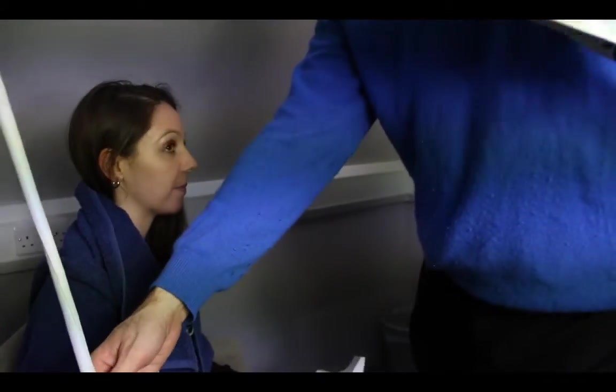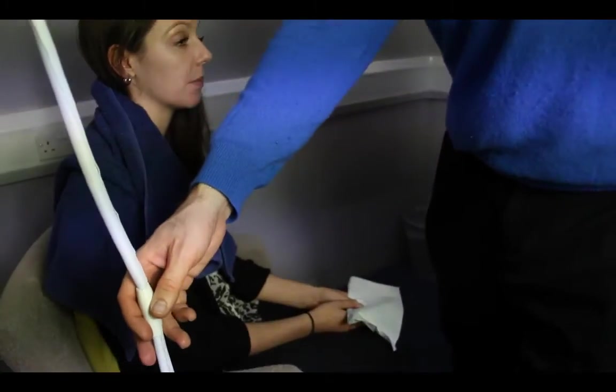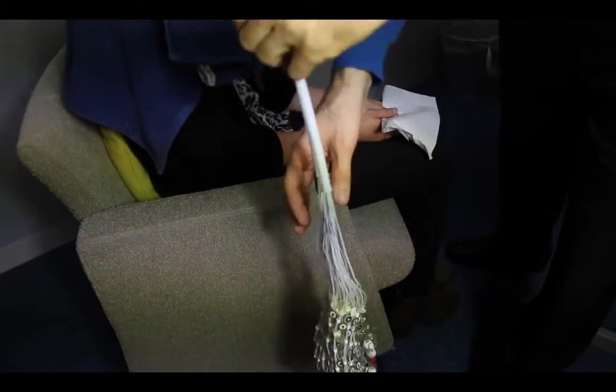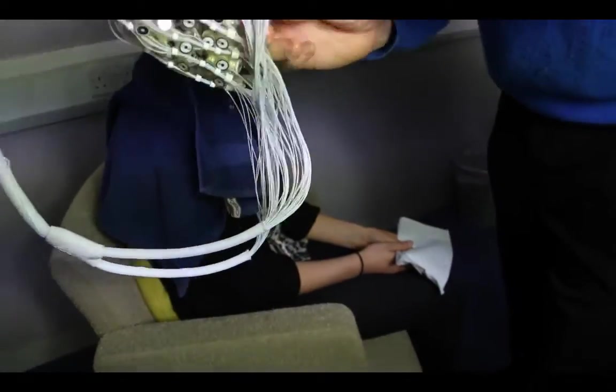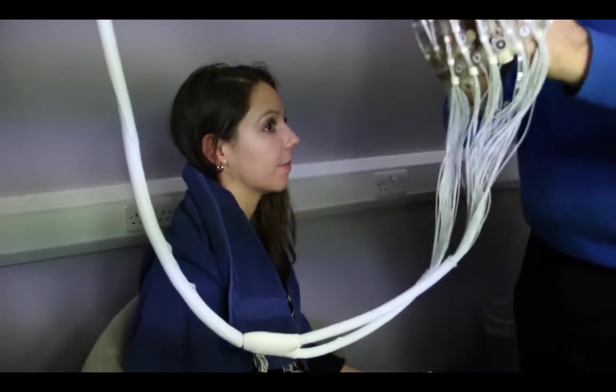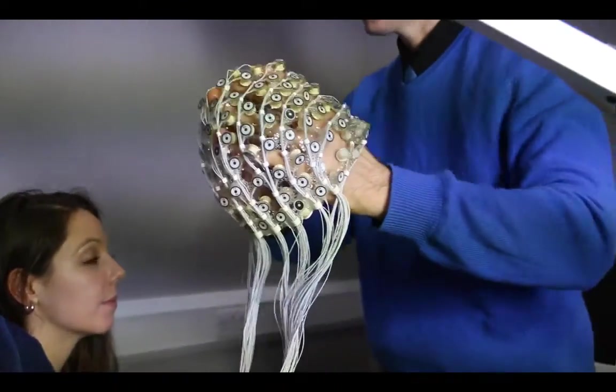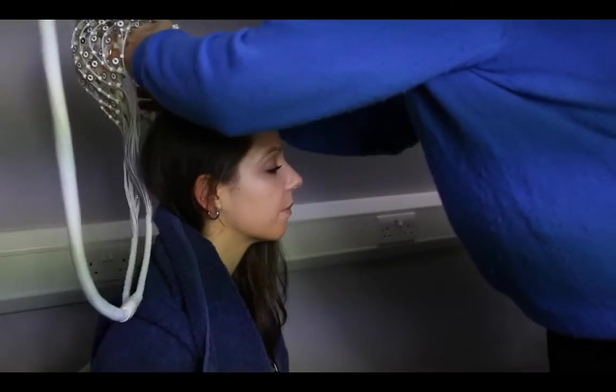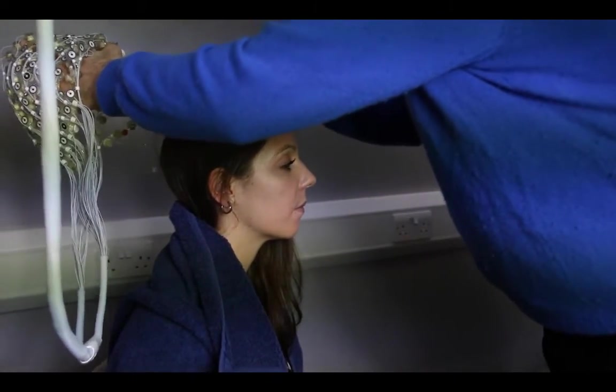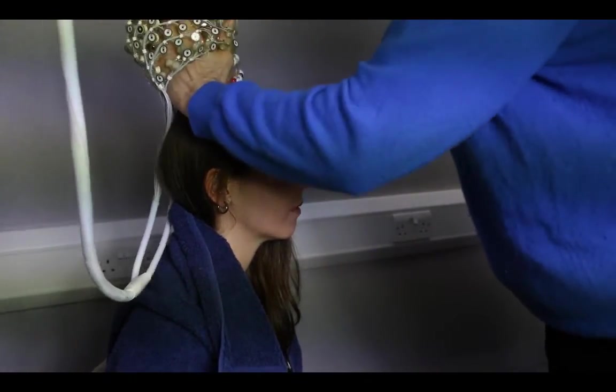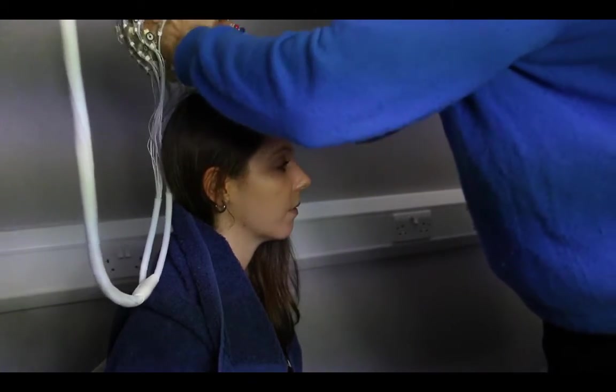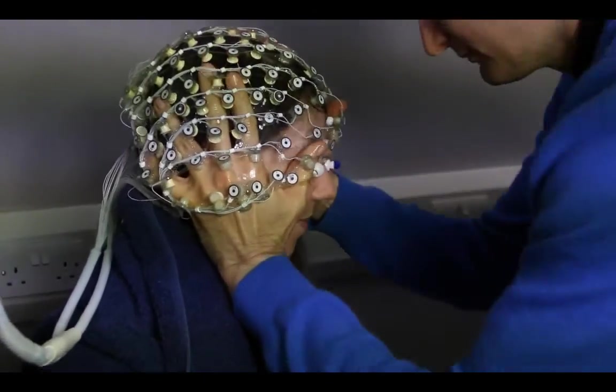Our third step in this last phase is placing the EEG cap on the participant's head. To do so, you'll want to spread your fingers on either side on the inside of the cap. There's a reference electrode in the center of the cap called CZ. You'll want to place this directly on the X which you've made previously.